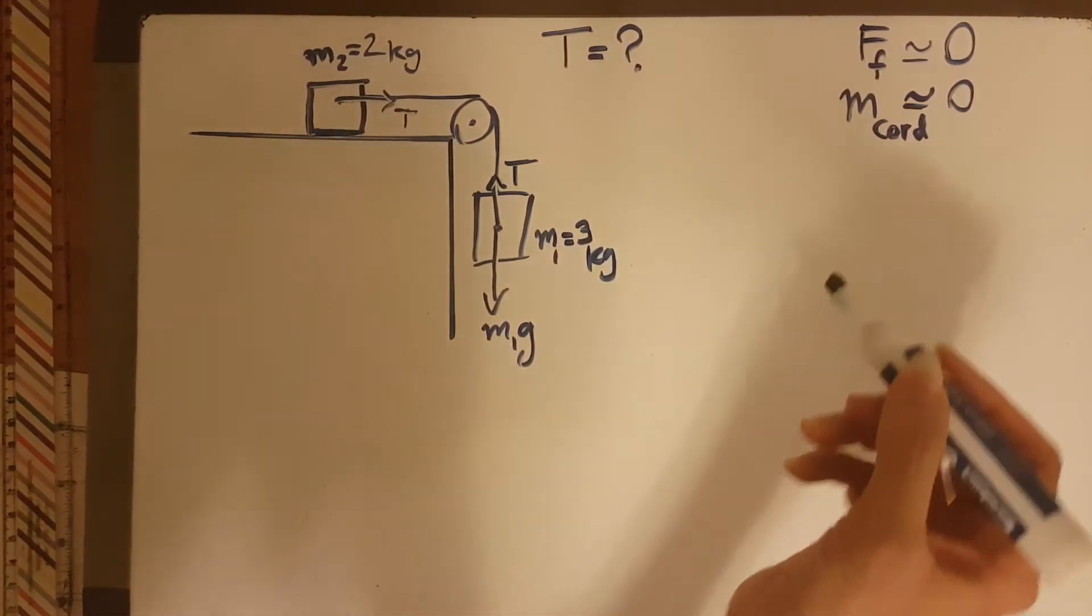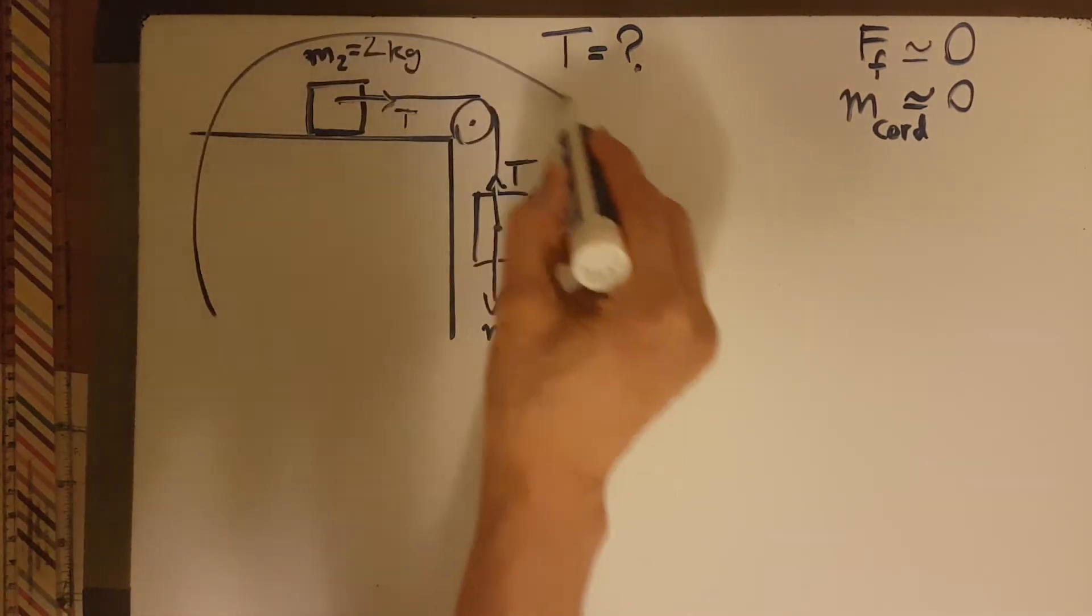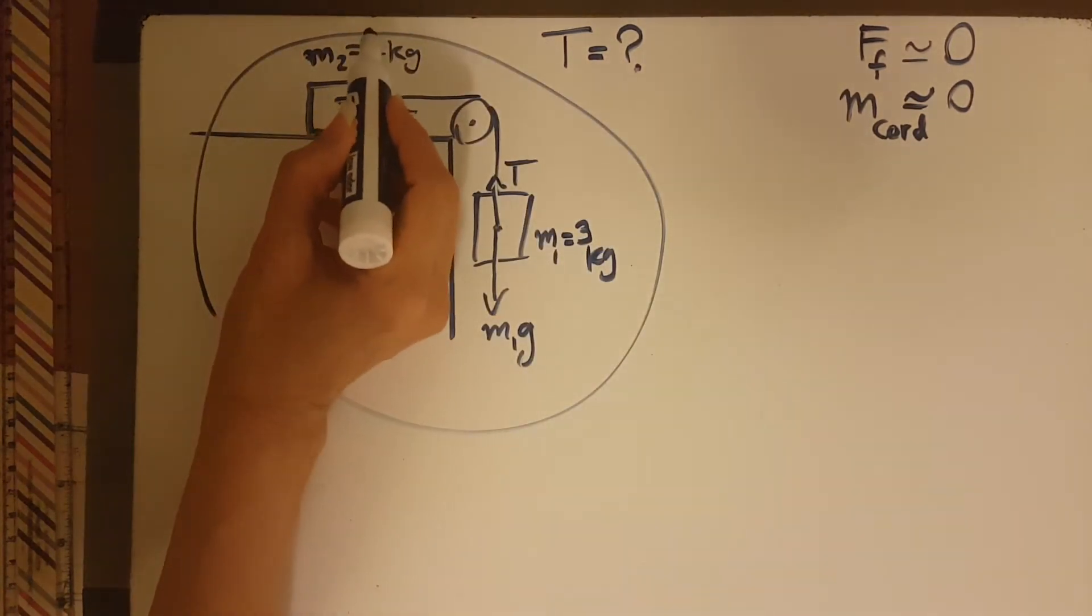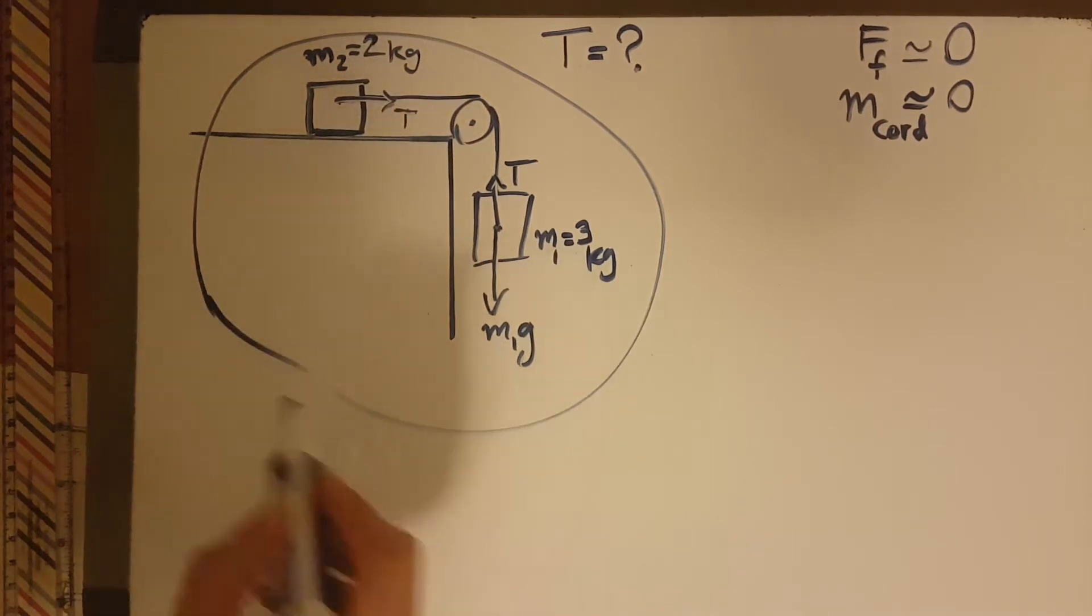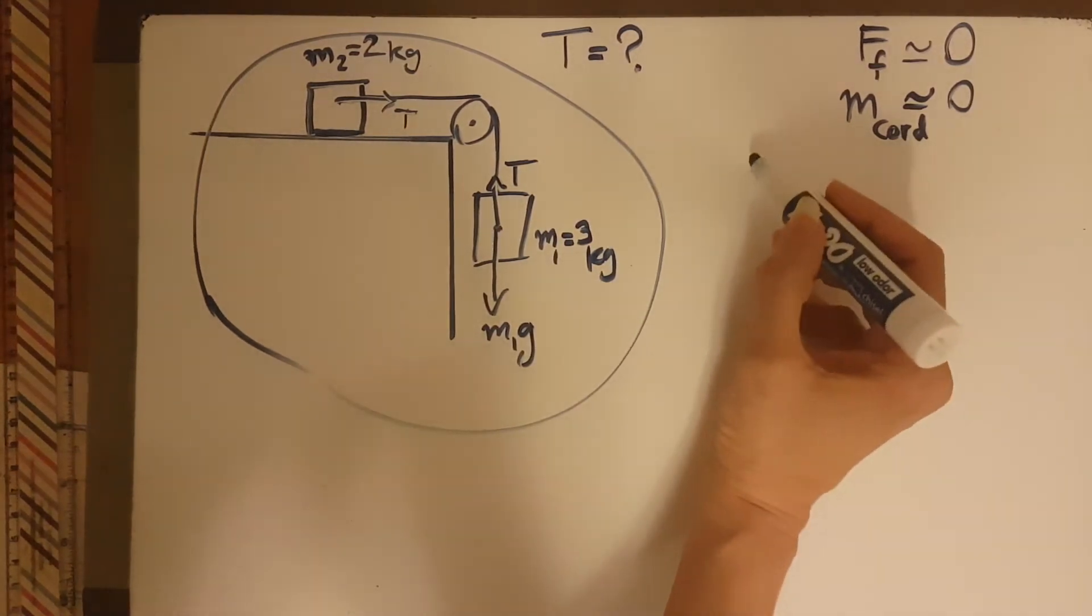So for us, in order to find the T, we first need to find the acceleration. We first consider the whole system. I call this the circle method because I draw a circle around the things. Now for the whole system, the T's will cancel each other.